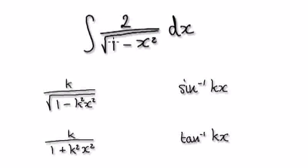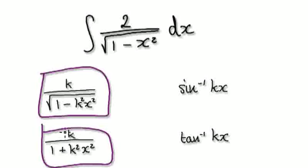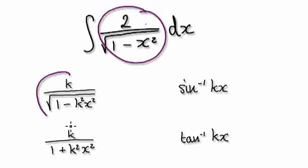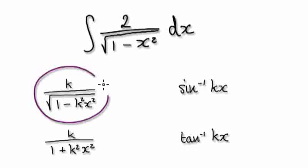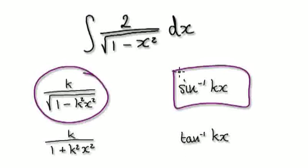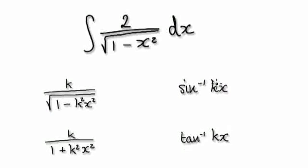If you want to find the indefinite integral of this, remember to ingrain these forms inside your mind. This here is of the form of this. Our first guess should be the inverse sine of KX. In this case, K will be one, because the coefficient here is one.